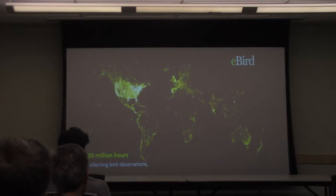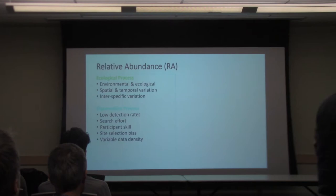You would see Mexico and Central America a lot brighter, and India would be a lot brighter on this map if we made it with data today. So eBird is one of the largest biodiversity databases in existence.